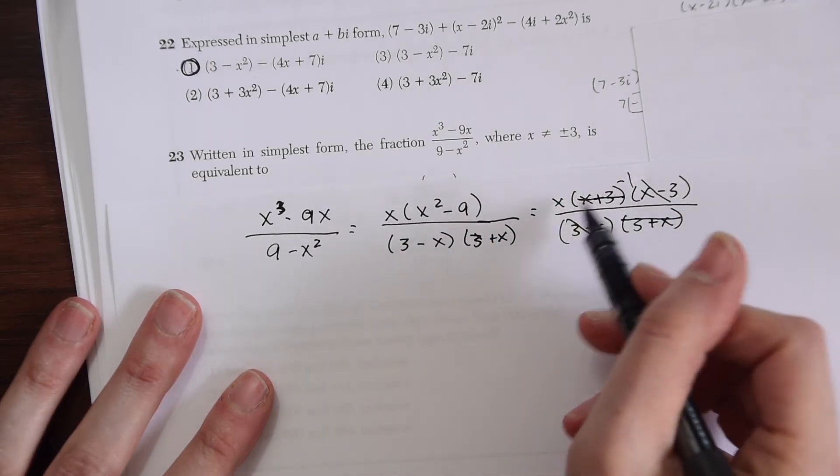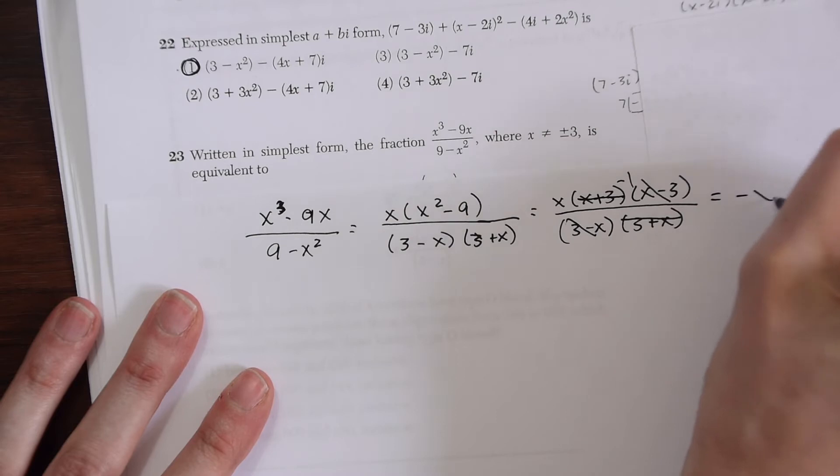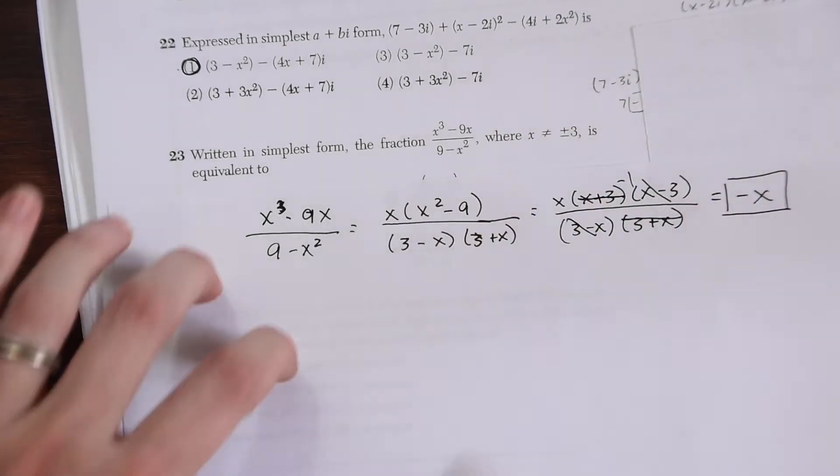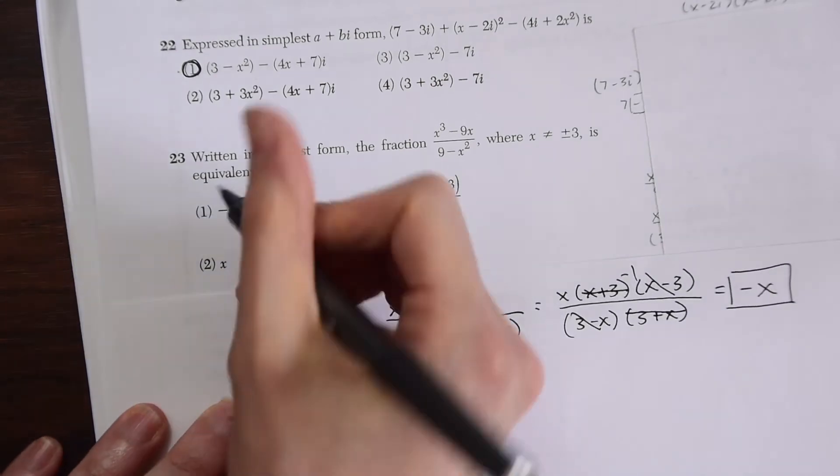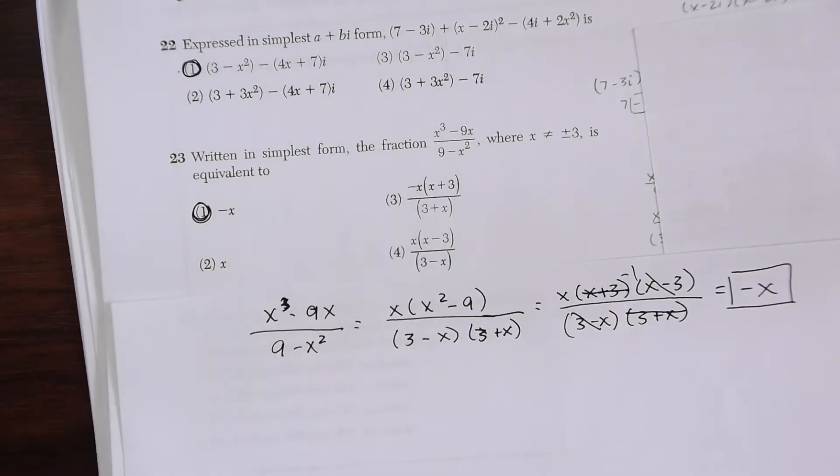So in fraction form this becomes negative 1. Now we have negative 1 times x which just gives us negative x and that's our answer. If we look back at our choices we have choice 1 is negative x and that's our answer.